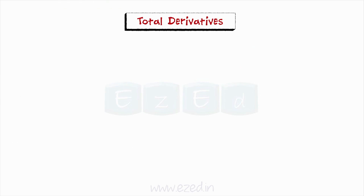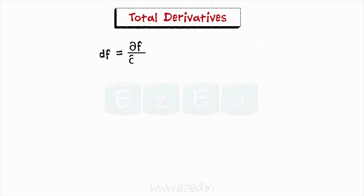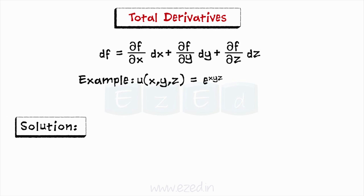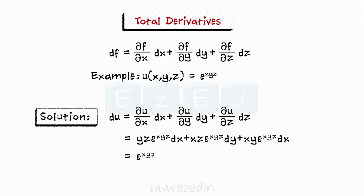Similarly, the total derivative of a function f of three variables x, y, and z is defined as dF equals del F by del x times dx plus del F by del y times dy plus del F by del z times dz. Example 1: Find the total derivative for the function e to the power xyz. Substituting and simplifying, we get du equals e to the power xyz times (yz dx plus xz dy plus xy dz).